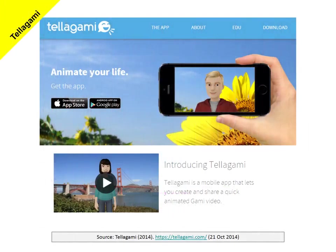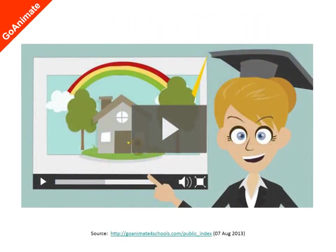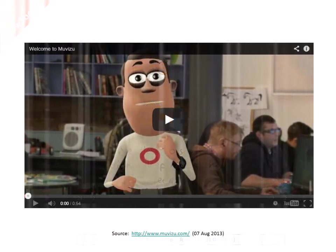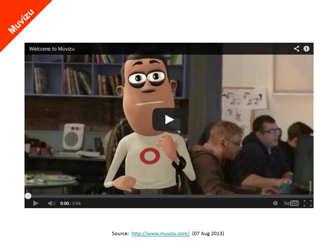A relatively new service which does much the same thing as Voki is the app-based Telegami. If you're using an Apple or Android device, you might like to check out this app in the relevant app store. There are also a number of services which allow students to create animations or cartoons, sometimes involving multiple characters. The most popular service in this area, Extra Normal, closed down in 2013, but there are some possible substitutes: GoAnimate, Powtoon, and MovieZoo. You might like to check out these and other similar services on the Videos page of the Digital Learning website.